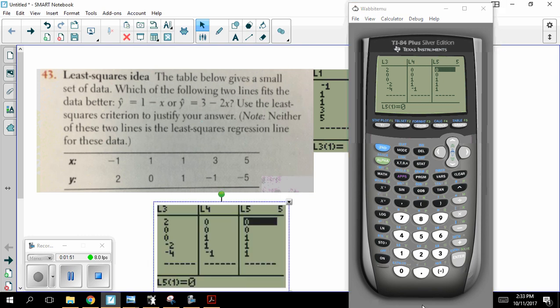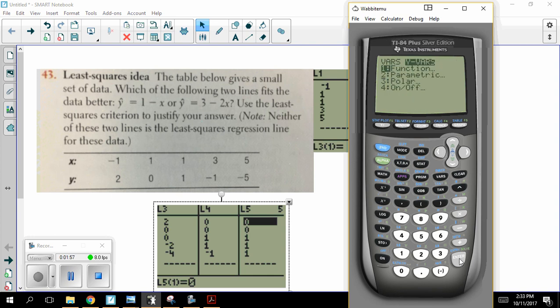Now I want to do the same idea for the second line. So now in L3, it's going to be Y2 of L1, taking all the L1s and plugging them in there. Finding out how wrong I was here. The actual values in L2 minus the predicted values in L3.